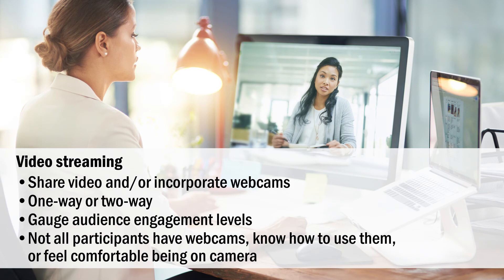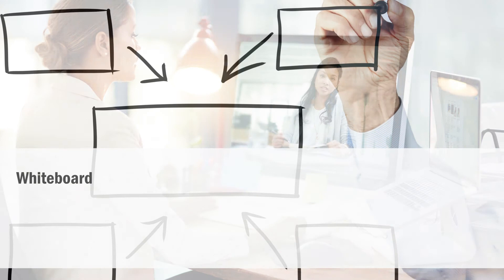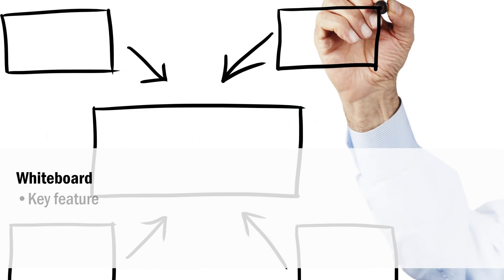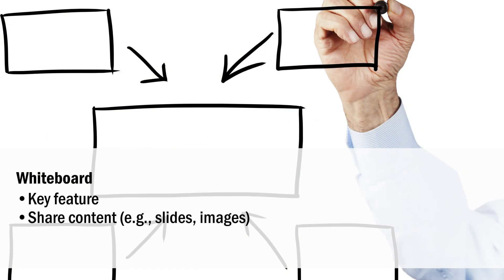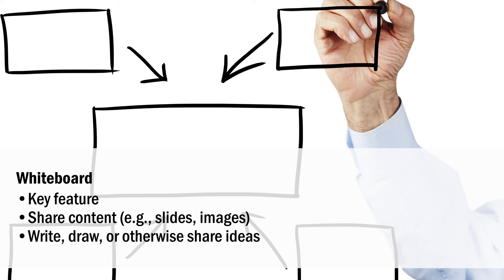However, not all participants may have webcams, know how to work them, or feel comfortable being on camera. The whiteboard is perhaps the most key feature. This tool allows you to share your content — for example, slides or images — and it can serve as a literal whiteboard to let you or your participants write, draw, or otherwise share ideas.